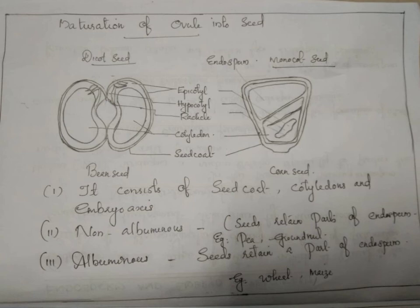The integuments of ovules harden as a tough protective seed coat. The micropyle remains as a small pore in the seed coat to allow entry of oxygen and water. On the availability of favorable conditions, seeds germinate and are later dispersed by abiotic and biotic agents. These are the events that occur during the post-fertilization stage.